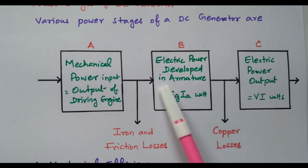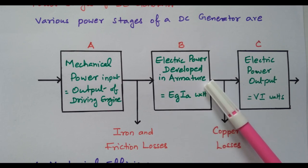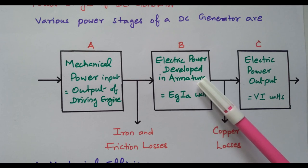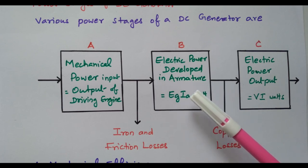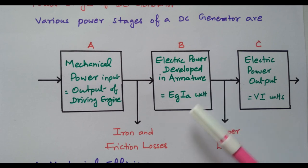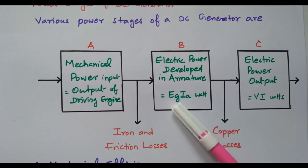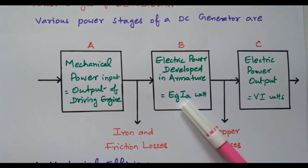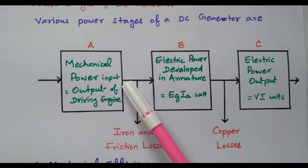In the next stage, the electric power will be developed in the armature. The principle is: the field winding already has a magnetic field available. When the armature rotates, it cuts the magnetic flux produced by the field winding. Due to that, EMF is induced in the armature — EG × IA, that is generated EMF multiplied by armature current. Due to rotation, friction loss and iron loss occur immediately; the balance goes to the next stage.